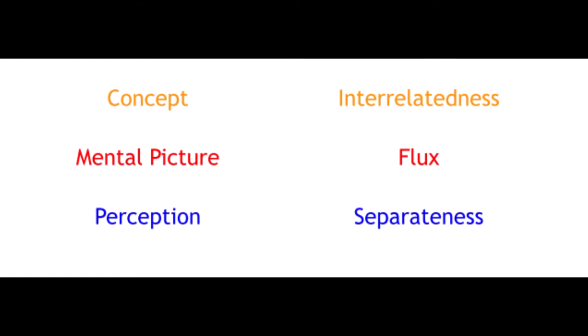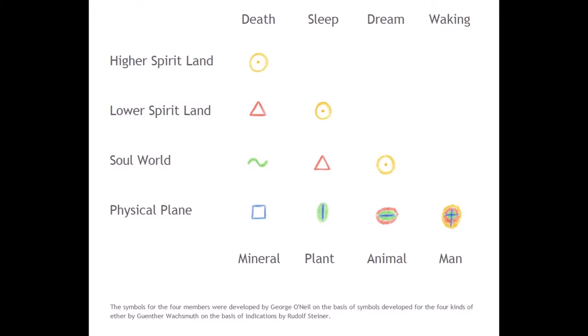Depending on what layer of being a particular being inhabits, it encompasses more or fewer of these levels. Here is a diagram of the four kingdoms of nature.